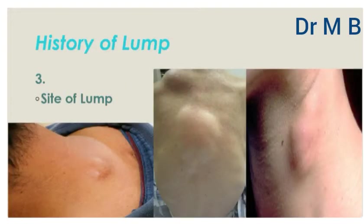Move on to the next point. You will ask about the site of the lump. Some swellings are most commonly originating at a specific site. For instance, a ganglion cyst is most common at the wrist joint, and a carbuncle is common at the back of the neck. Asking the site of the lump will help you make a differential diagnosis.